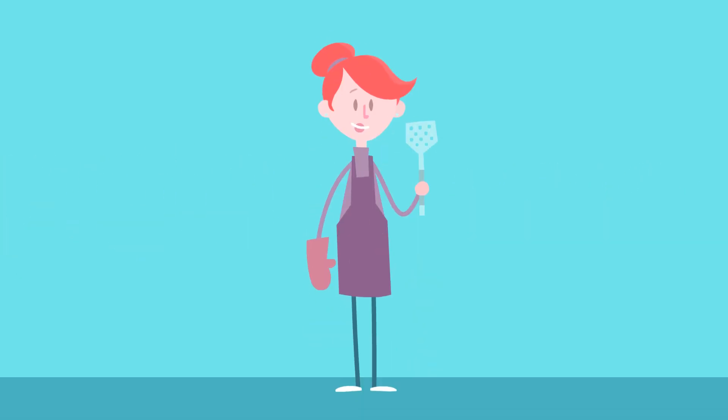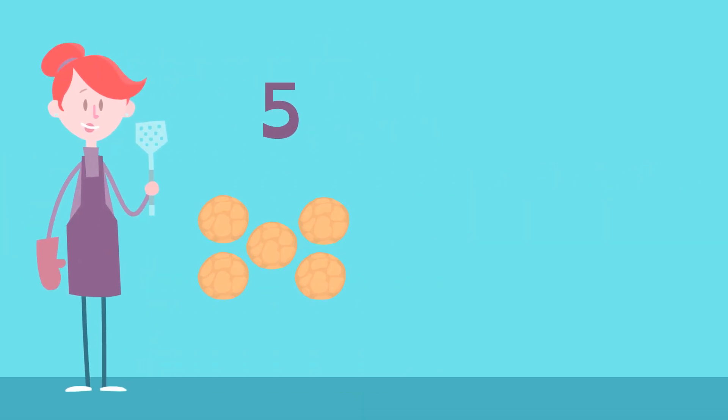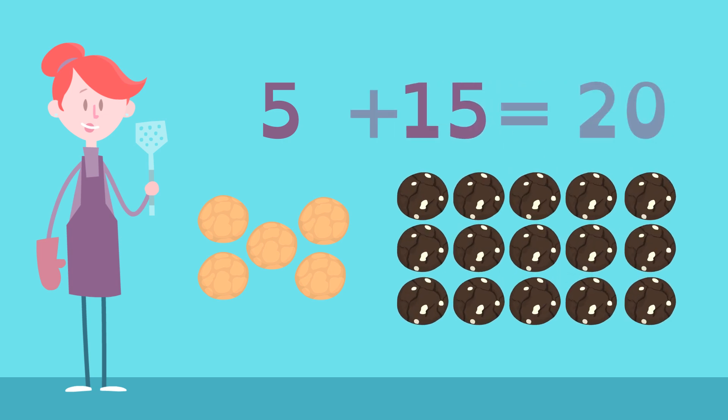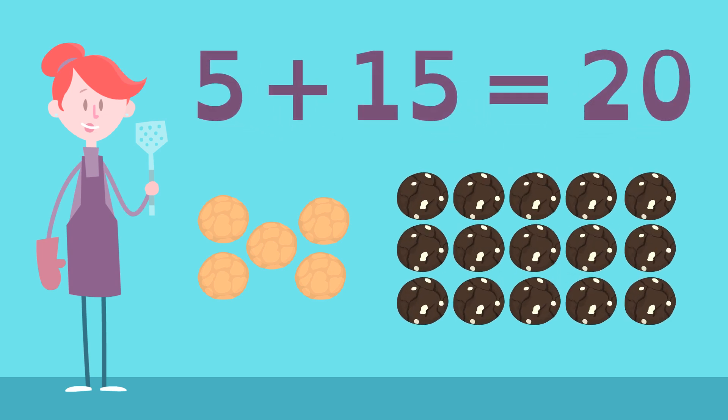Lucy bakes cookies for 5 of her friends. 5 lemon and 15 chocolate for a total of 20 cookies. This mathematical equation represents the cookies.